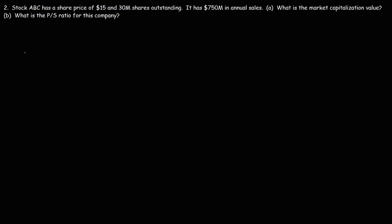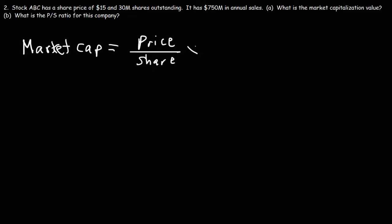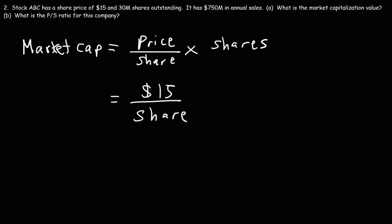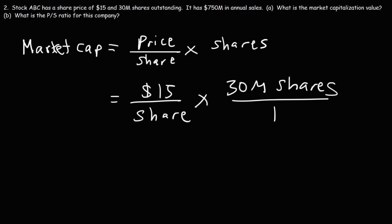So let's start with part A. The market capitalization can be calculated by multiplying the price per share times the number of shares outstanding. This gives you the market value, or the price, of the entire company — called the market cap, or market capitalization. So the share price is $15 per share, multiplied by 30 million shares, giving us a market cap of $450 million. That's the value of the whole company in this example.